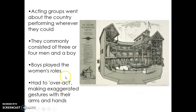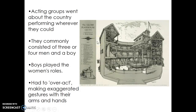Acting groups went around the country to perform wherever they could, and they commonly consisted of three or four men and a boy — boys played the women's roles. They had to overact, making exaggerated gestures with their arms and hands, because there were no microphones and people were probably shouting and interrupting the play. Once you read Shakespeare, you'll see he's really into dramatic irony — I can imagine the audience shouting at the characters not to do something because they, the audience, know things that the characters on stage do not. Dramatic irony.